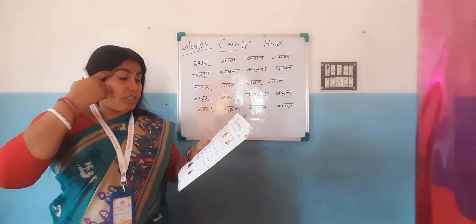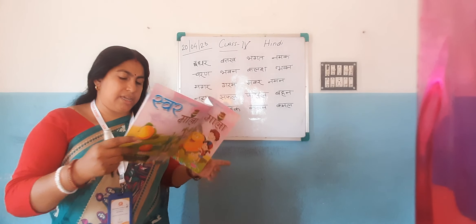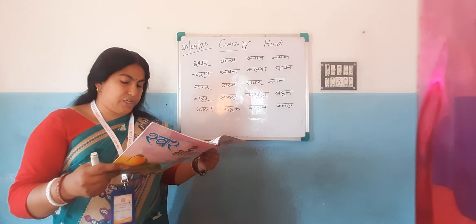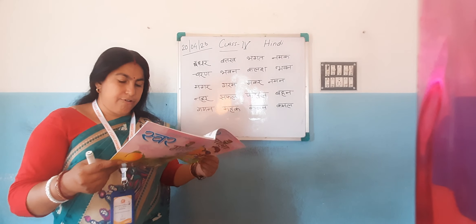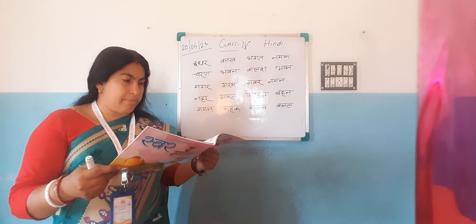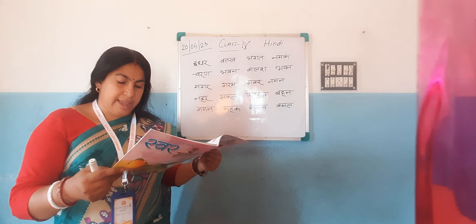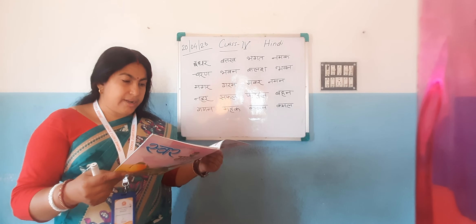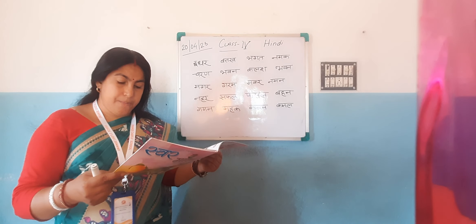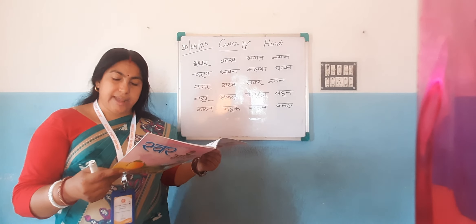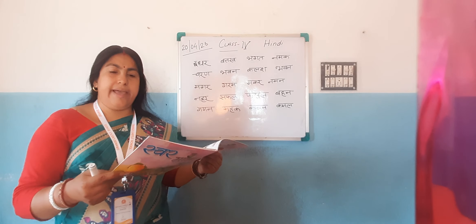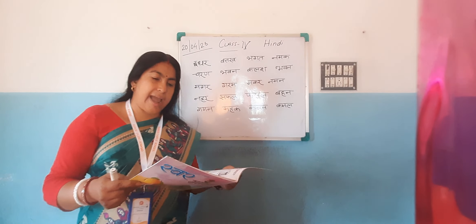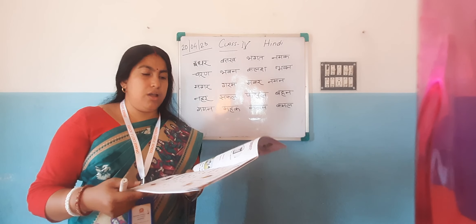Now, Chitron ko dekhkar unke naam likhye — look at the pictures and write the name. First is Harmas, then Pankar, then Ajigar, and then Hattabal. Okay guys, do it in your book.